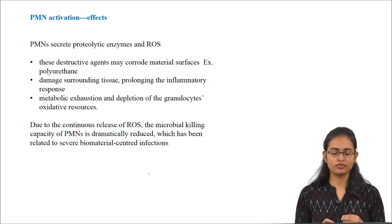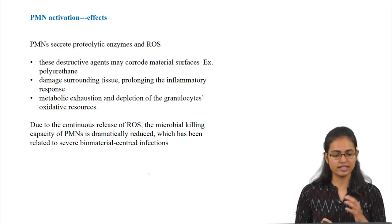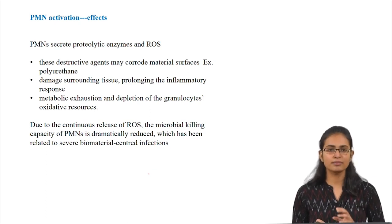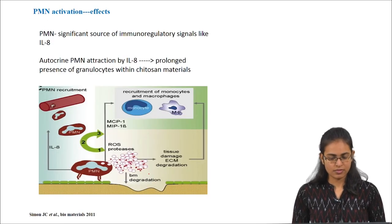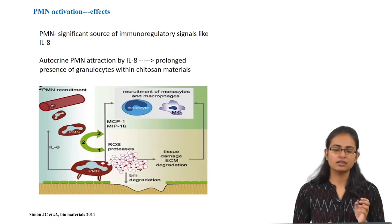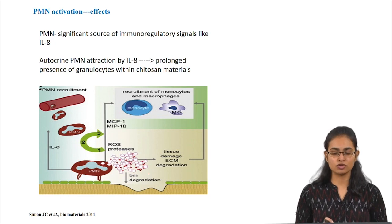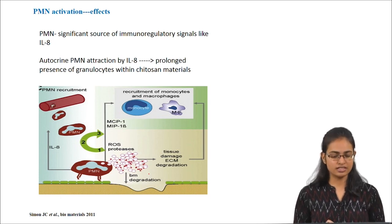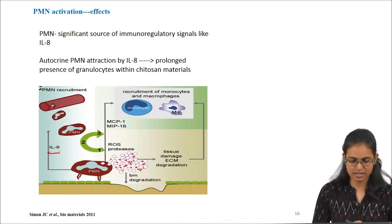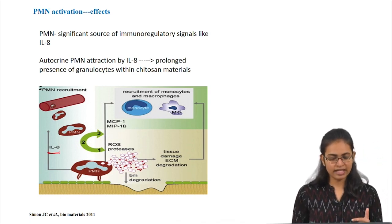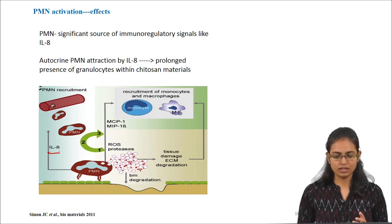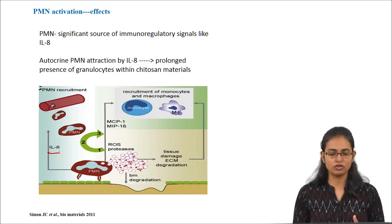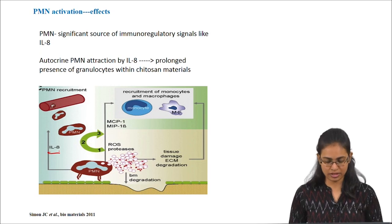Due to the continuous release of ROS, they also cause metabolic exhaustion and depletion of the granulocytes' oxidative resources, and the microbial killing capacity of PMNs gets reduced, hence making the biomaterials more susceptible to infections. PMNs are also a significant source of immunoregulatory signals such as interleukin-8, and autocrine attraction by interleukin-8 has been shown to prolong the presence of granulocytes within chitosan materials.